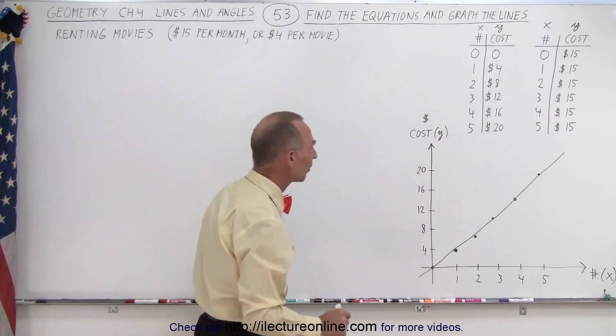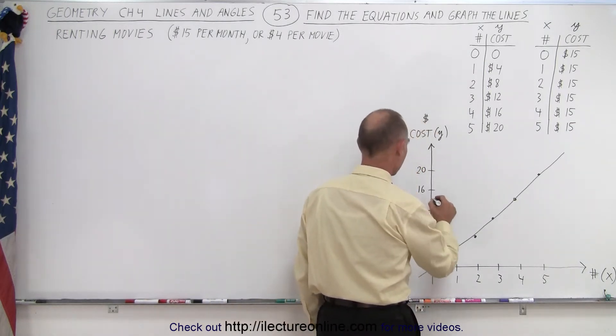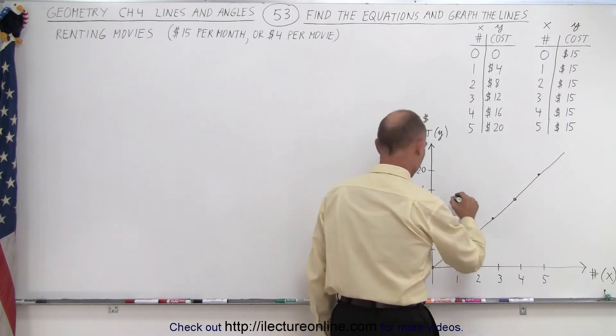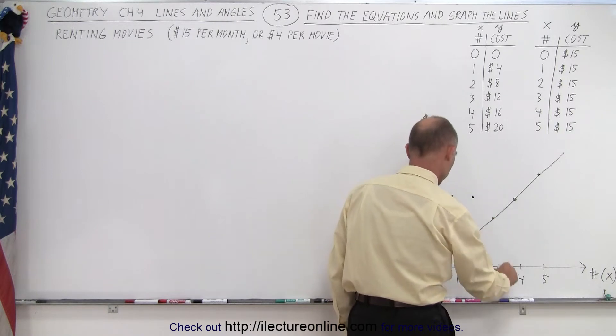If we do the second line, notice that if we rent zero movies, we pay fifteen dollars. So fifteen dollars is about here. Rent one movie, you still pay fifteen dollars. Rent two movies, you still pay fifteen dollars. Three movies, still pay fifteen dollars.